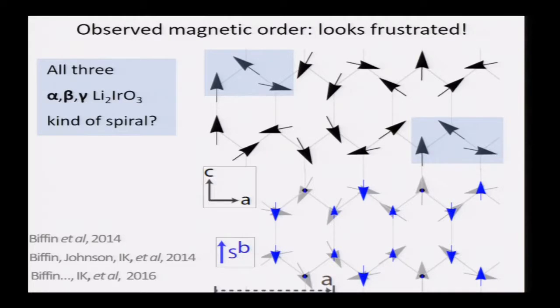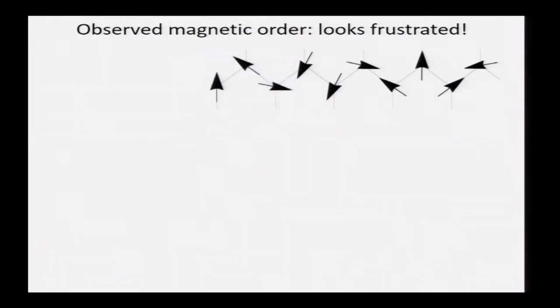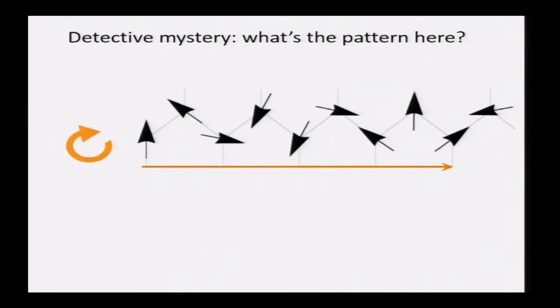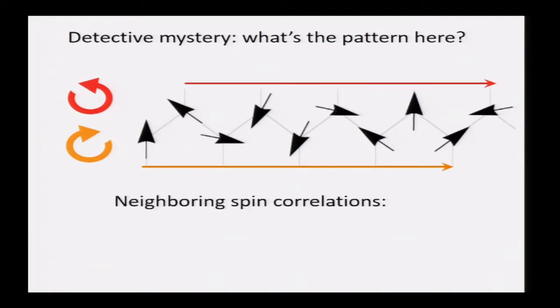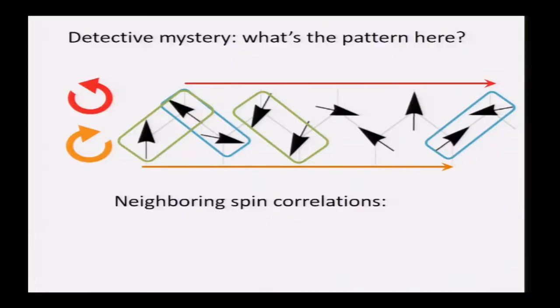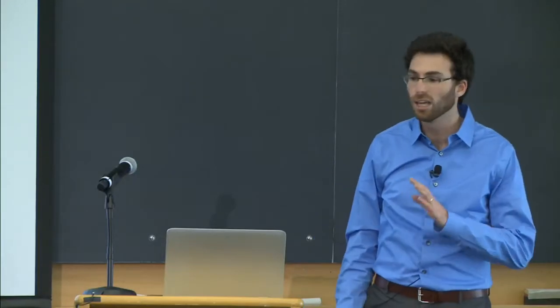So how do we even start to make sense of this? Looking at just part of the pattern, you can see that rows repeat elements from the first two rows, so it's enough to look at just the first two rows — this kind of zigzag chain. There's a detective mystery here: look at the bottom row going left to right and the spins rotate clockwise. Now look at the top row going left to right — they rotate counterclockwise, the other way. Sometimes the spins want to point the same way, sometimes basically opposite ways, and on average it's exactly zero. That tells us there's something really weird going on.